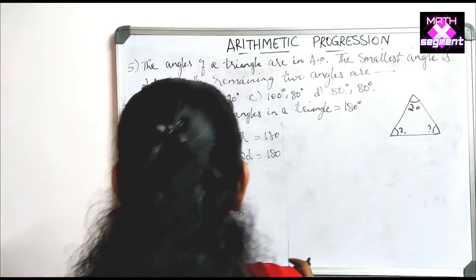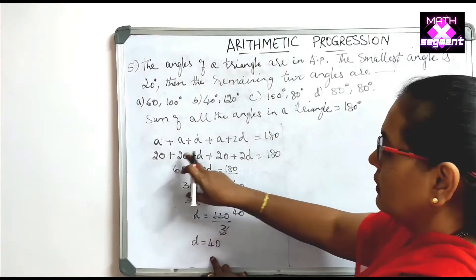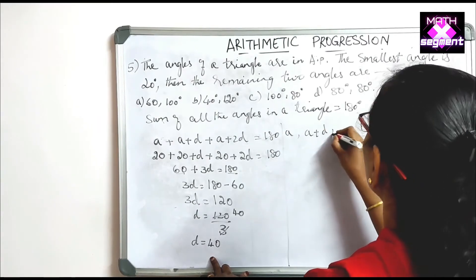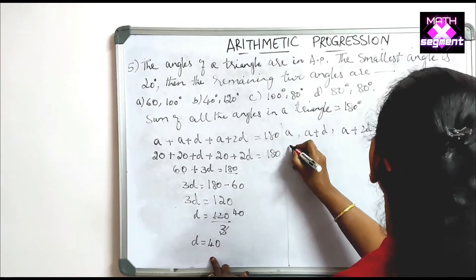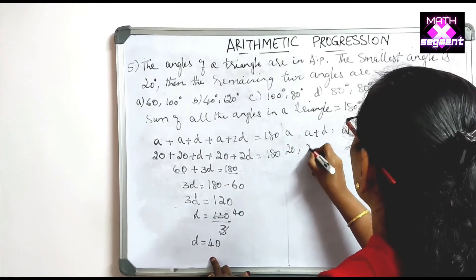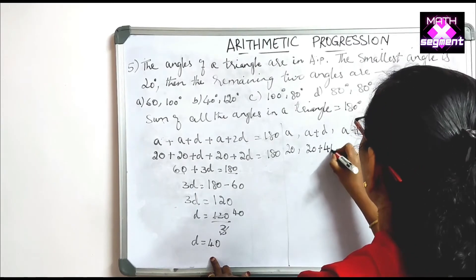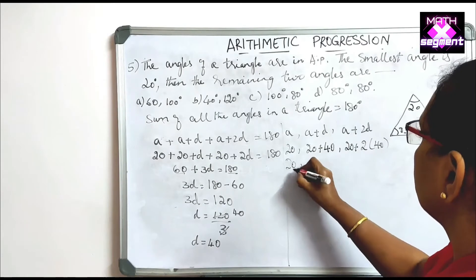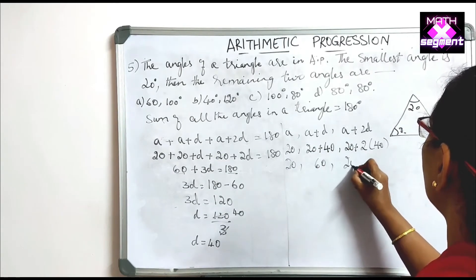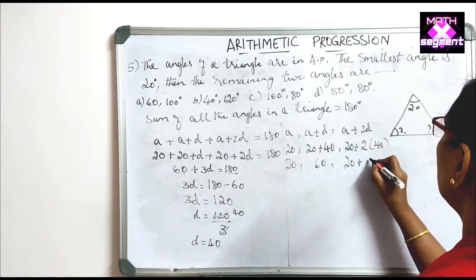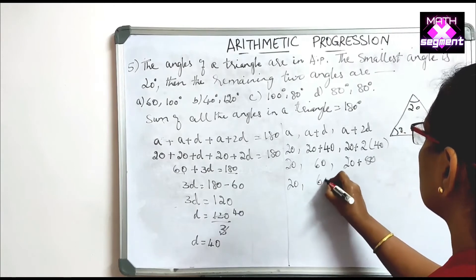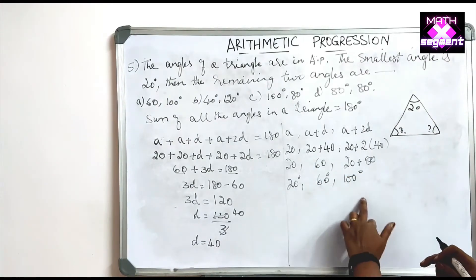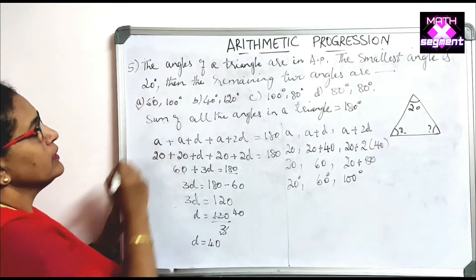Now finding all three angles using A, A plus D, A plus 2D: A is 20, A plus D is 20 plus 40 equals 60, and A plus 2D is 20 plus 80 equals 100. So the three angles are 20, 60, and 100 degrees. The remaining two angles are 60 and 100, which is option A — the correct answer.